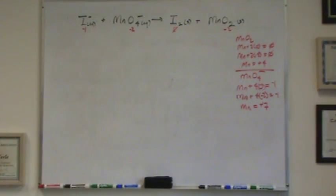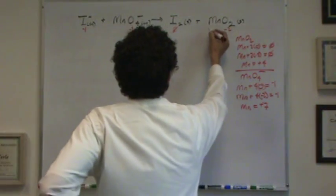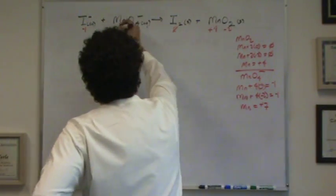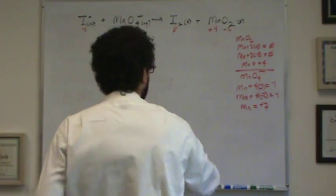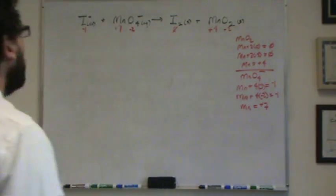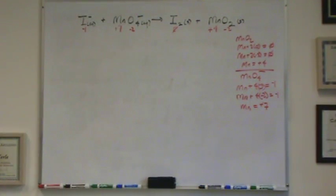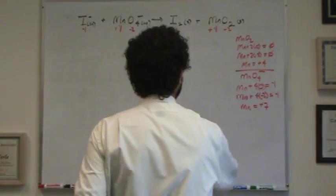So you can see the manganese is going to change. It's plus four here and plus seven here. So the iodine increases in oxidation state, that's called oxidized. The manganese decreases in oxidation state, that's called reduced. Or you can think it reduces its state from seven to four.